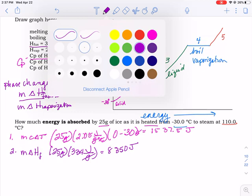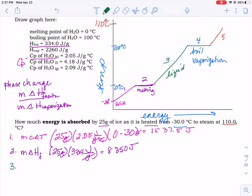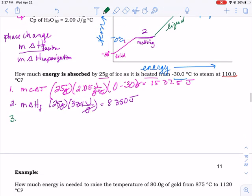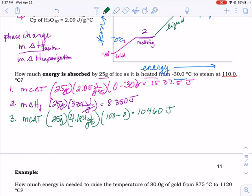Third step. Now we're going to go from 0 degrees to 100 degrees. So we have a temperature change. So we're back to using m*c*ΔT. 25 grams, 4.184 joules over grams degrees Celsius. And our temperature went from 0 to 100. So we multiply 100 times 4.184 times 25, and we get 10,460 joules.